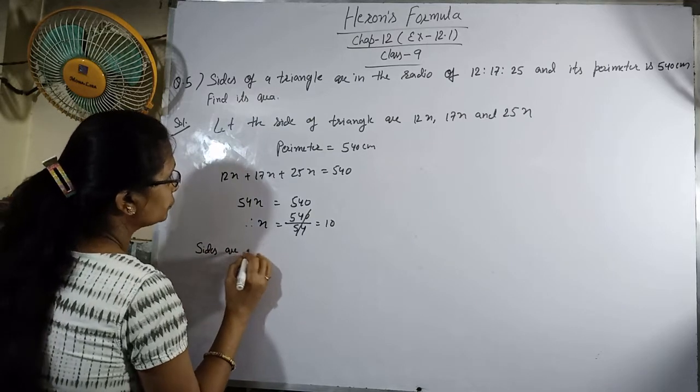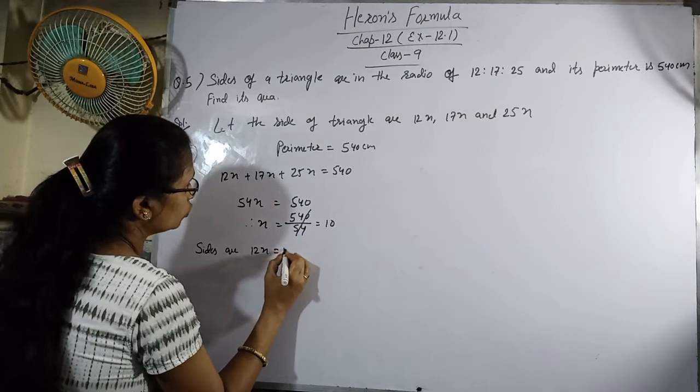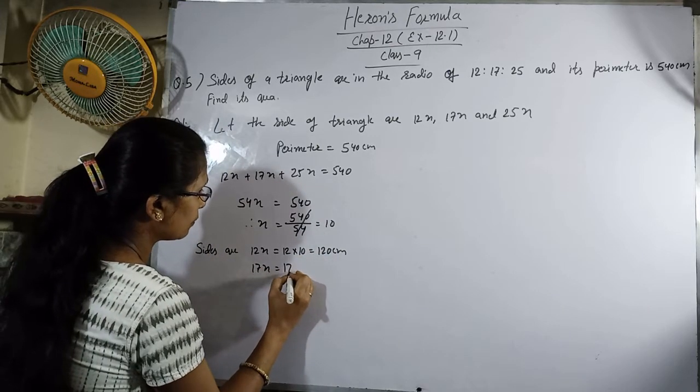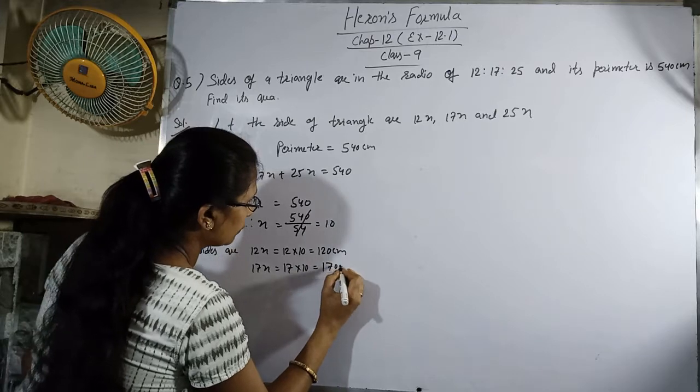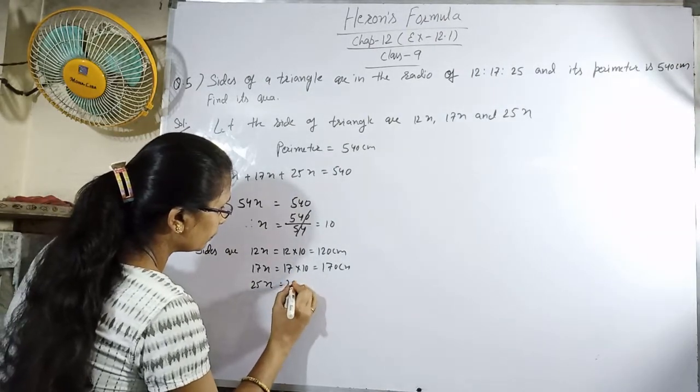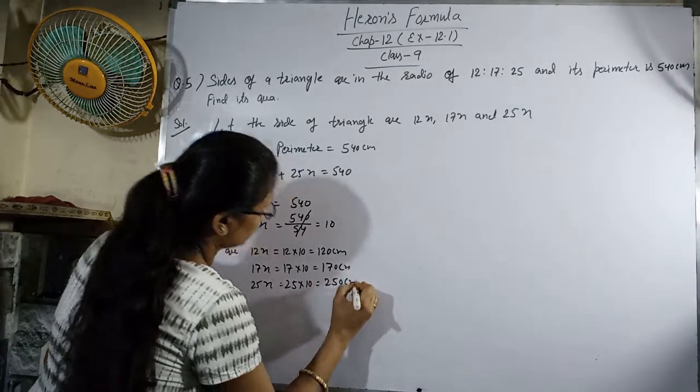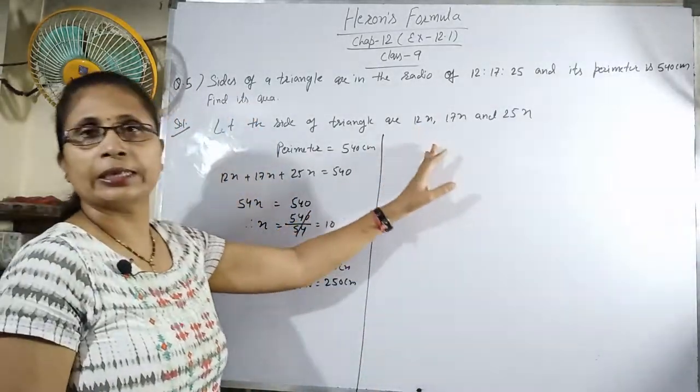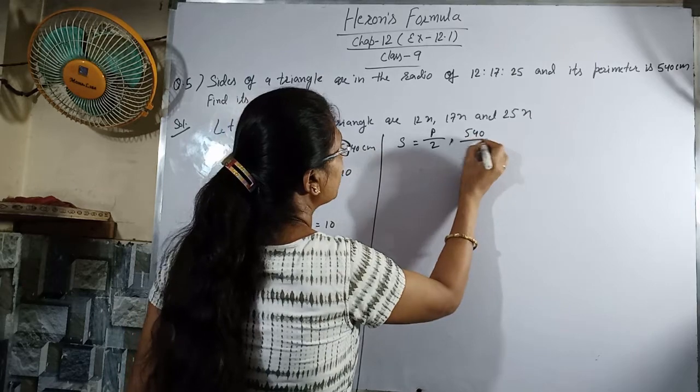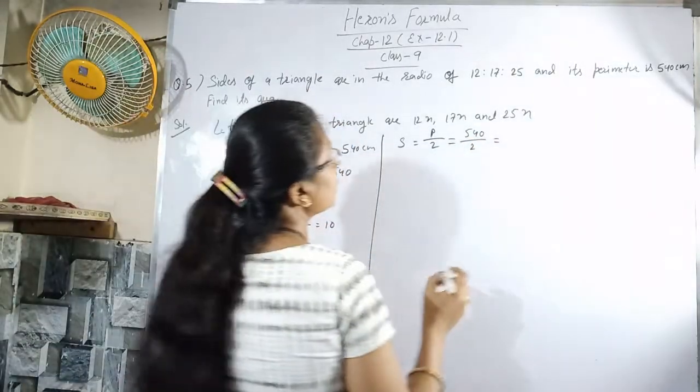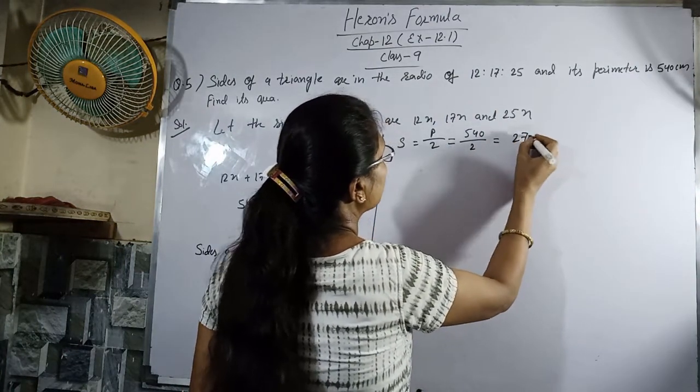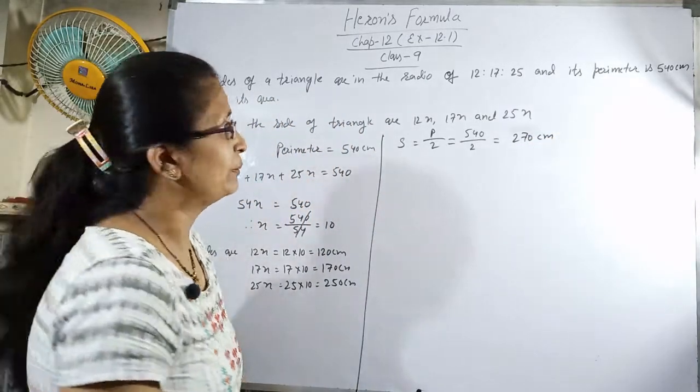So the sides are: 12x equals 12 times 10 which is 120 cm, 17x is 17 times 10 which is 170 cm, and 25x is 25 times 10 which is 250 cm. Now we find s. S equals perimeter divided by 2, which is 540 divided by 2, equals 270 cm.